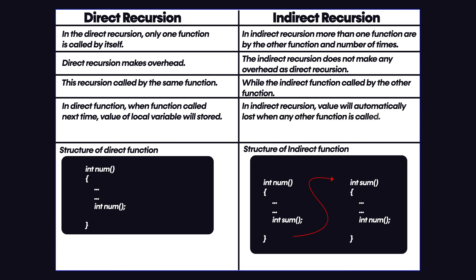But in indirect recursion, value will automatically be lost when any other function is called locally. Now because of this preservation of the value of the local variable, direct function is known as function engaged memory location, whereas the local variable of indirect function is known as not engaged memory location.